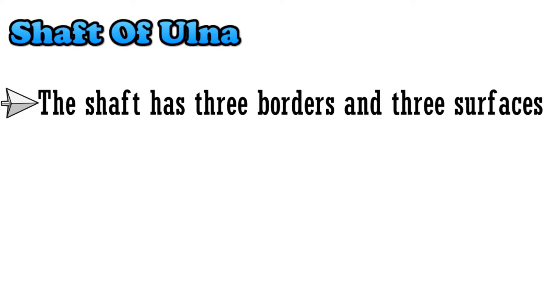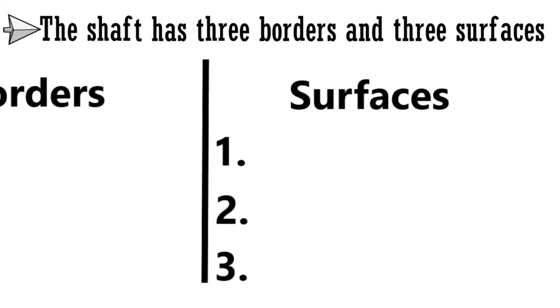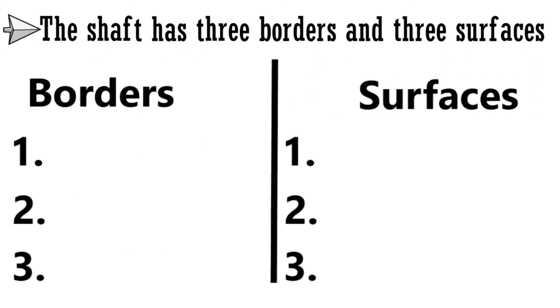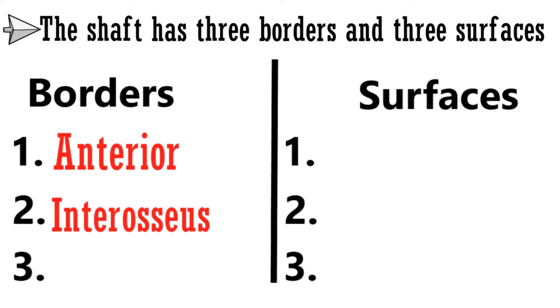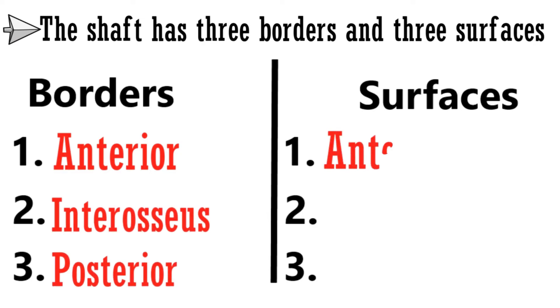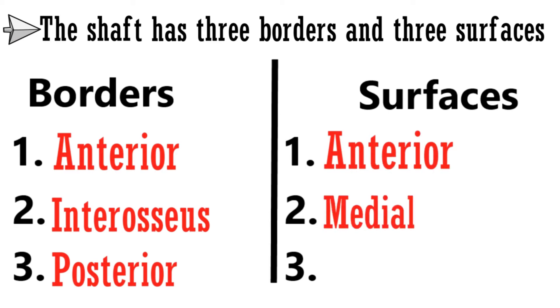The next part is the shaft. The shaft has three borders and three surfaces. The borders present are the anterior border, the interosseous border, and the posterior border. The surfaces are the anterior surface, the medial surface, and the posterior surface.